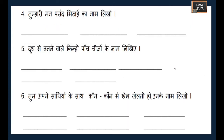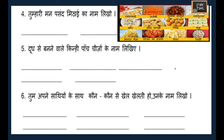For your favorite sweets (tumhari manpasand mithai ka naam likho), you can write any sweet: rasamalai, jalebi, gulab jamun, rasagulla, kheer, soan papdi, laddu, peda, agra peda, gajar ka halwa, kheer, or rabdi — write anything you like.